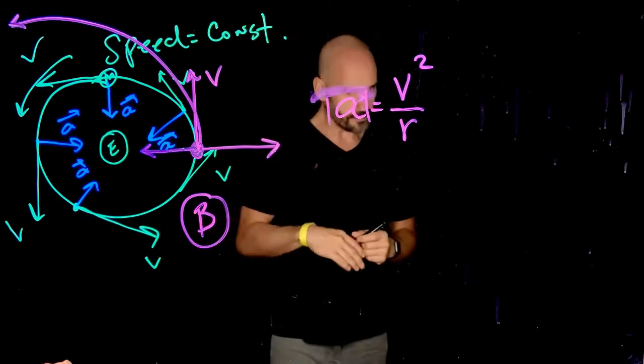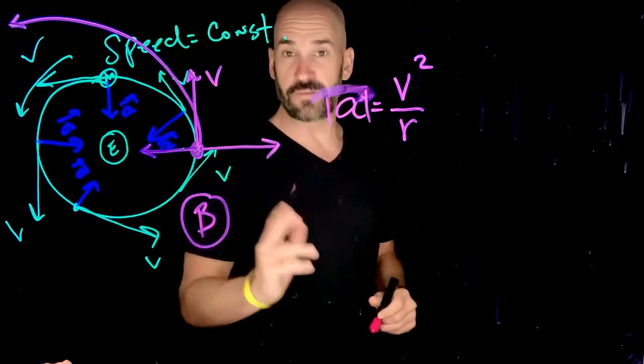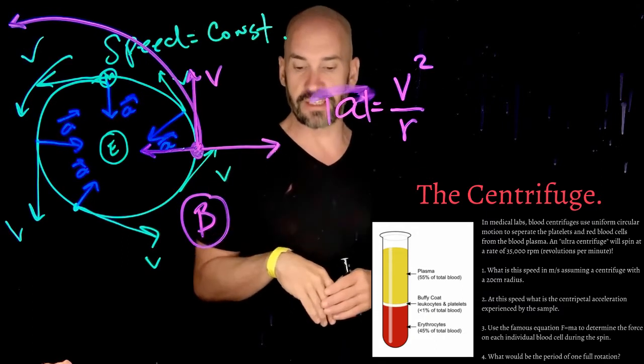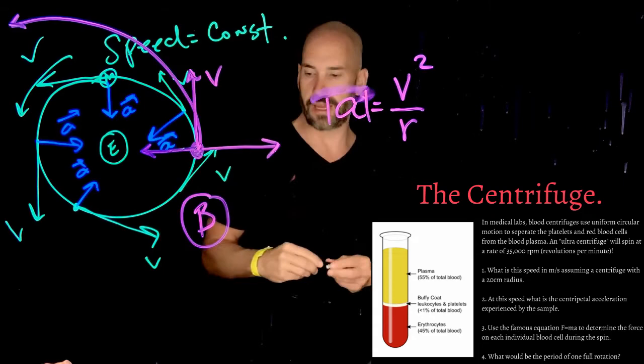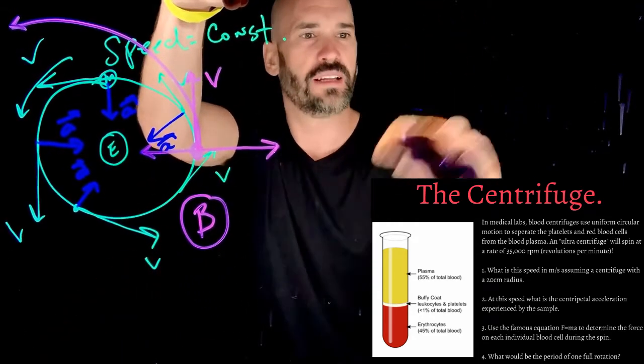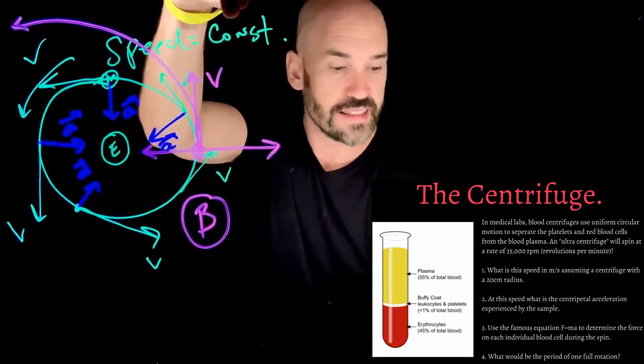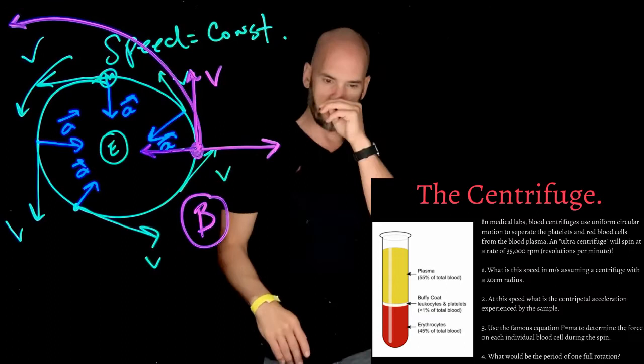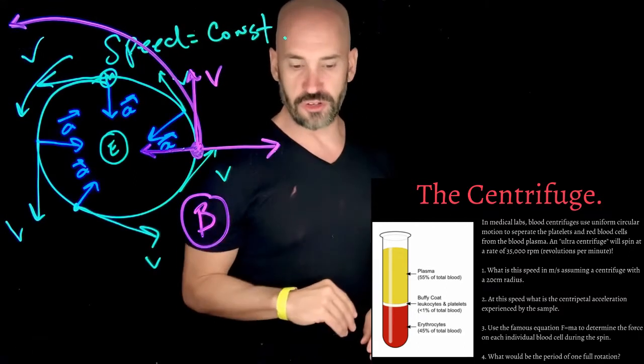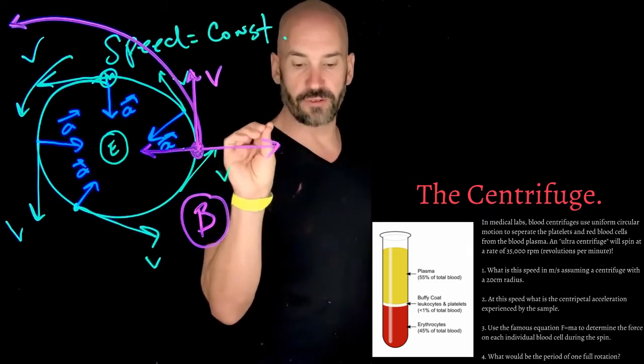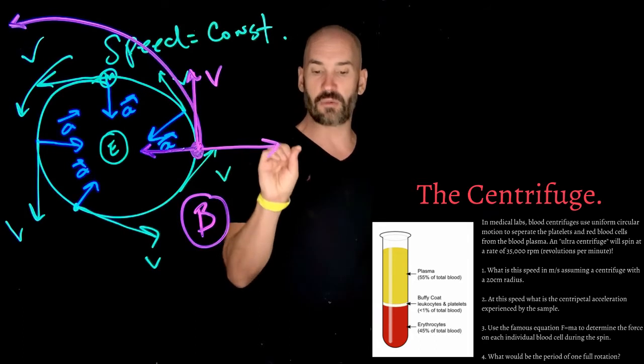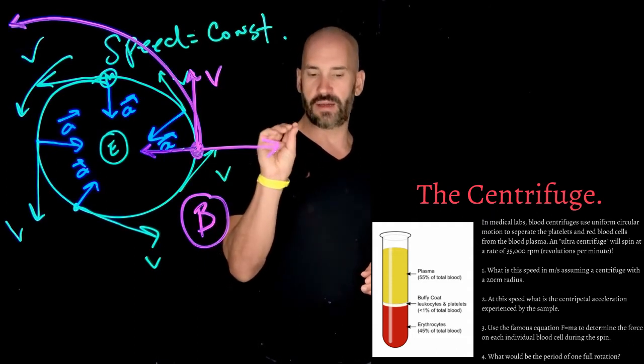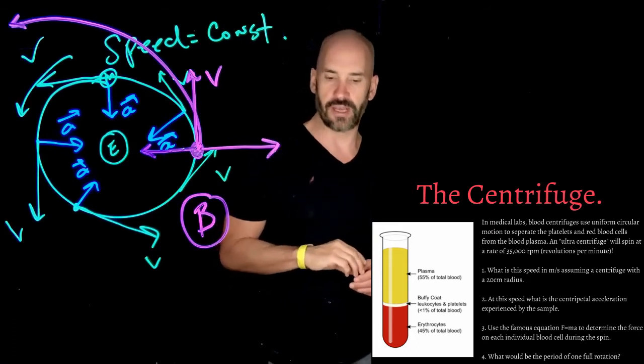So how do we apply this? Well, let's go ahead and use a biomedical application. The centrifuge. The centrifuge is our primary tool that we use to separate different components of blood, specifically the plasma and the actual blood cells. And you guys maybe have seen these before. It's really cool. They spin at like tremendous velocities, and they harness this power of centripetal acceleration to actually separate the cells from the plasma. So in medical labs, blood centrifuges use uniform circular motion to separate the platelets and red blood cells from the blood plasma. An ultracentrifuge will spin at a rate of 35,000 RPM, which means revolutions per minute. What is this speed in meters per second, assuming a centrifuge with a 20 centimeter radius? So we want speed first.